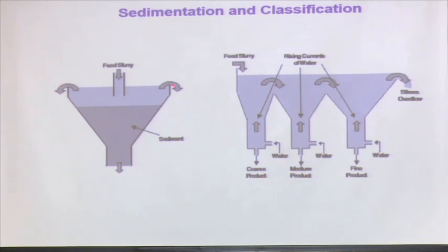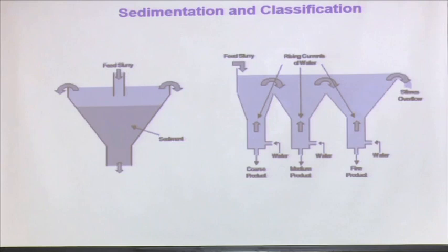If I keep pouring, the coarser particles will have more downward velocity, and the additional incoming water will carry the relatively lighter particles out. That is how we can separate the two - one part is the separation, and another part is the collection of the separated particles.